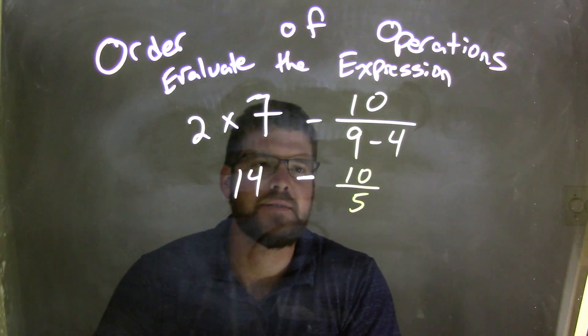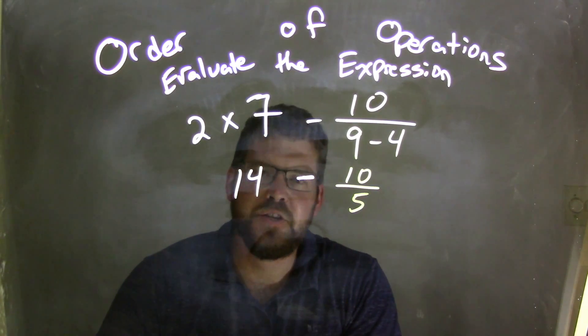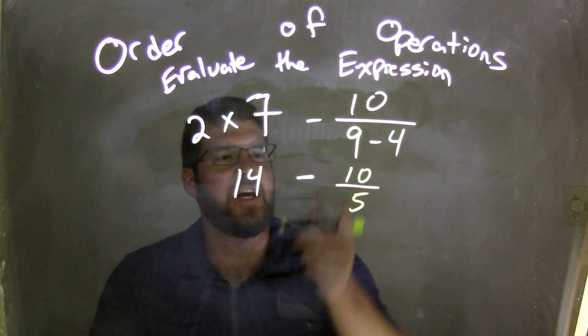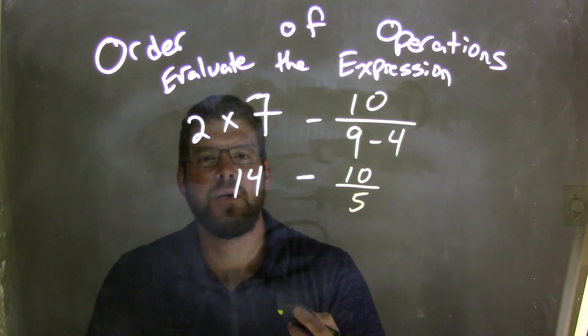So now we have 14 minus 10 divided by 5. Well, division comes before subtraction. So 10 divided by 5 comes out to be 2.